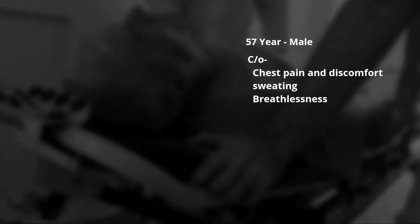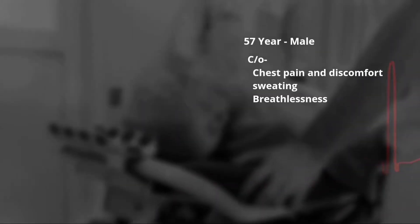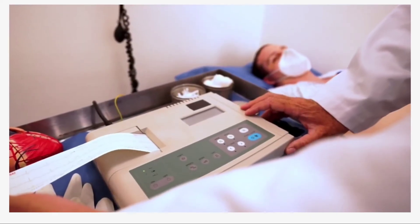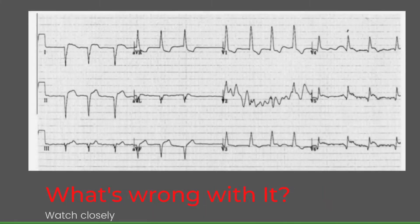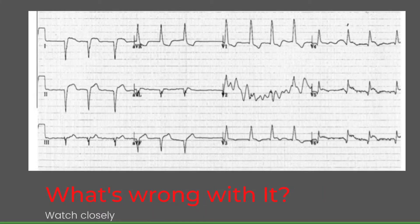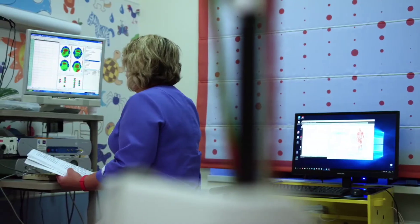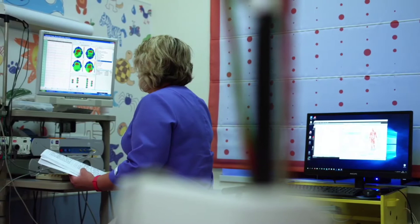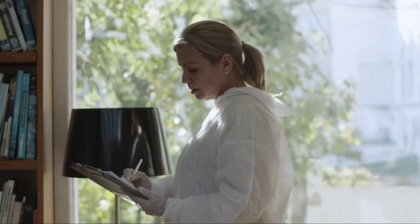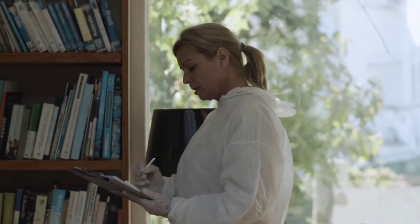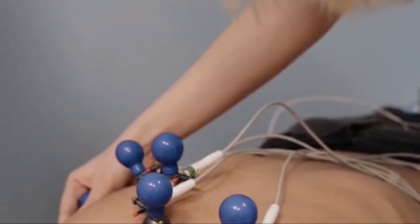A 57-year-old male walked into the ER with complaints of chest discomfort and sweating. An immediate electrocardiograph was recorded. Looking at this ECG — what's wrong with it? At first, the ER doctor analyzed it and prepared for thrombolytic therapy, but then the cardiologist, who has expertise in ECG interpretation, figured out that something was off.